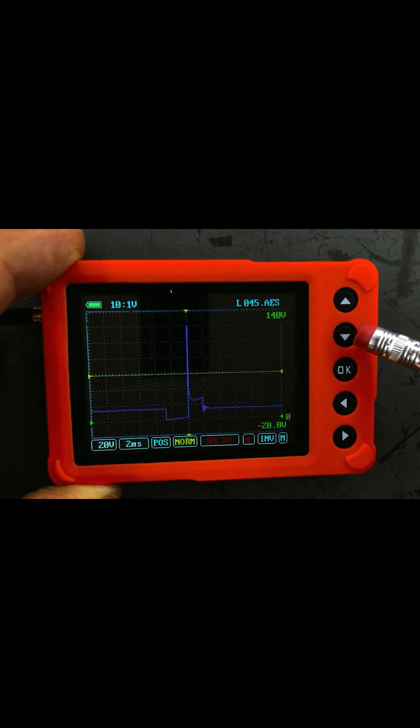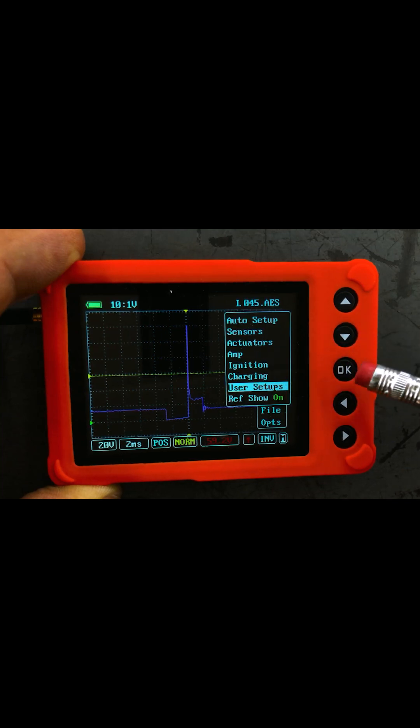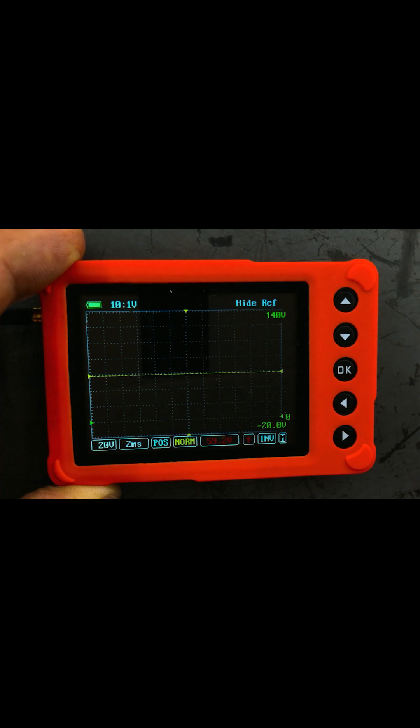There's our primary ignition reference file. Let's go ahead and turn that off. Go to presets, go to reference, show off, click OK. Now we're all set and ready to make this measurement.